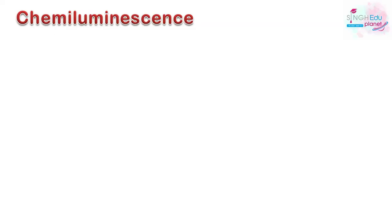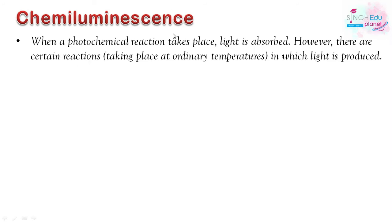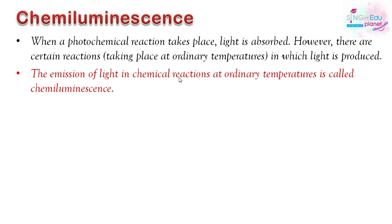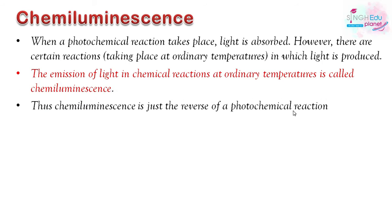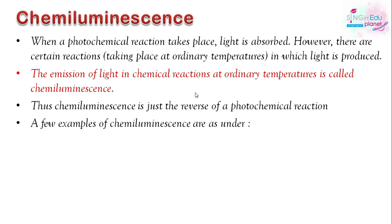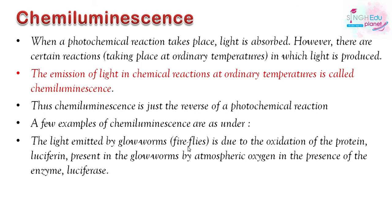So what is chemiluminescence? When a photochemical reaction happens, a few reactions that are at ordinary temperature take place, which causes light to be produced. The emission of light in a chemical reaction at ordinary temperature — that is chemiluminescence. For example, glow worms are fireflies, due to oxidation of a protein, luciferin, which is present in glow worms, oxidized by atmospheric oxygen in the presence of an enzyme, luciferase.